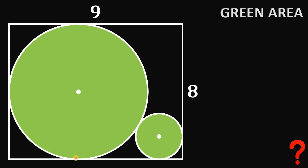If we draw the radius directly to the point of tangency, we know this is a right angle, and we know the length of this radius because this circle is perfectly fit inside the rectangle. The radius must be half of 8, which equals 4 units. Now let's drop a perpendicular line — this is the radius of the small circle, and we don't know its measure, so let's call this R.